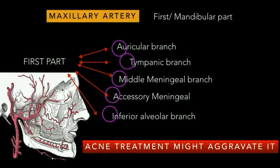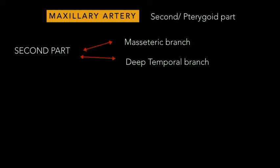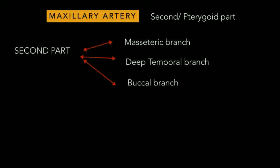After this, the maxillary artery passes over the head of the lateral pterygoid muscle. This is called the pterygoid part, or the second part, and it gives out branches: the masseteric branch, deep temporal branches, buccal branch, and the pterygoid branch.